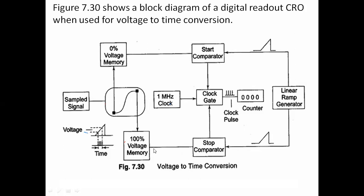The clock pulses pass through the clock gate until the stop comparator produces the stop signal. The stop comparator compares the 100% voltage signal with the ramp voltage. When these two are equal, it produces the stop signal, closing the clock gate. Within the opening and closing of the clock gate, clock pulses are produced and counted by the digital counter. The count obtained is proportional to the time within the given period.